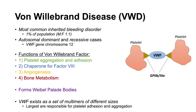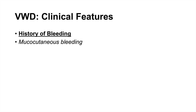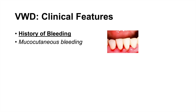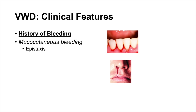When it comes to von Willebrand disease, the clinical features include a history of bleeding. The bleeding is not as severe as other bleeding disorders — generally we see mucocutaneous bleeds, including gingival bleeds, epistaxis, and menorrhagia. Menorrhagia can be one of the most common findings, and women with the disease may not know they have it but have a family history of menorrhagia.